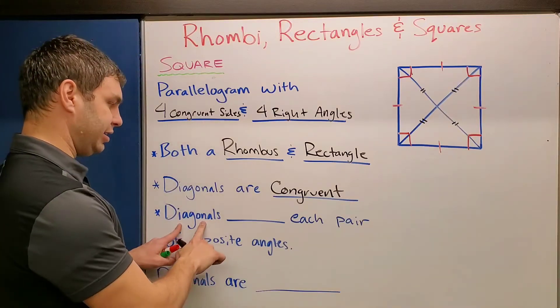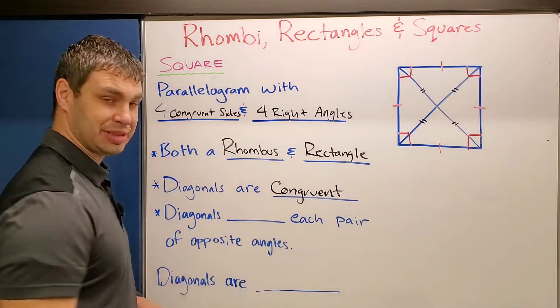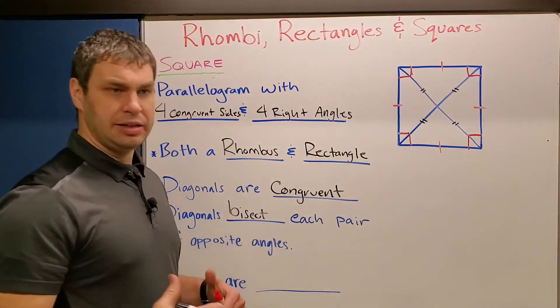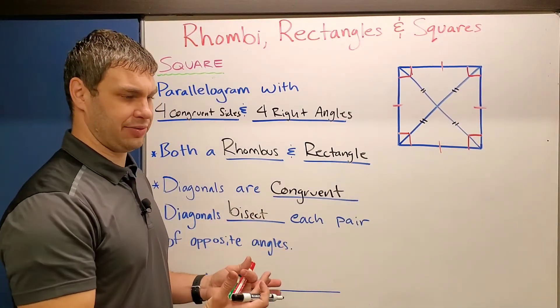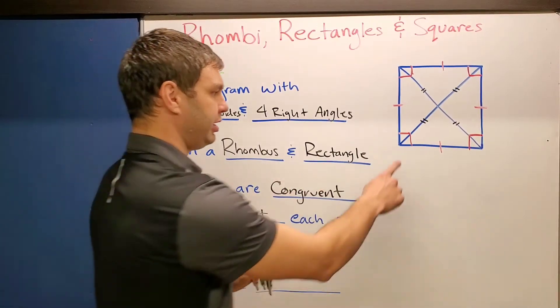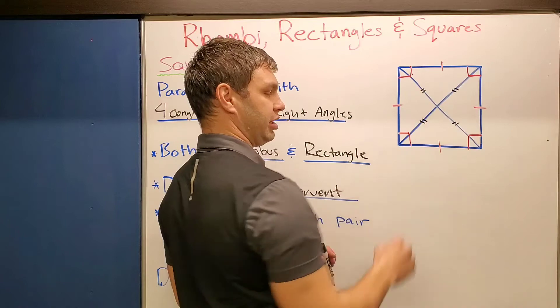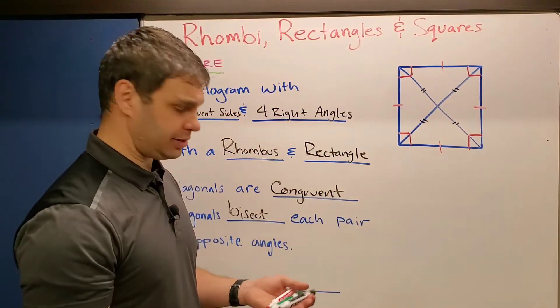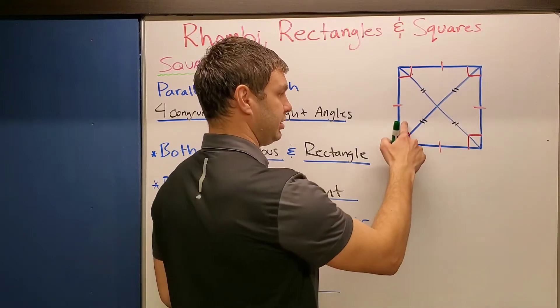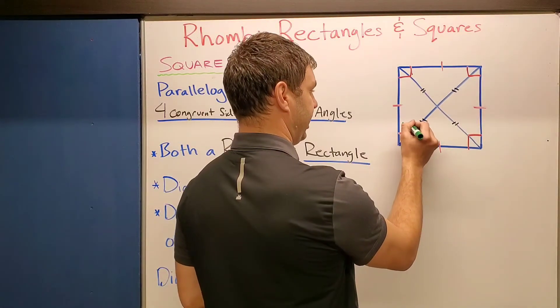Alright. And then the next one is the diagonals bisect each pair of opposite angles. Again, this is going to be bisect. Okay. Now with rhombuses, when those bisected the different angles, we didn't necessarily know what those measures were. However, since we know that all of our opposite angles are going to be right angles, they're 90 degrees. We know if you bisect those, that each one's going to be 45 degrees for their respective half here.